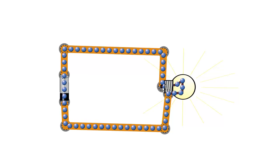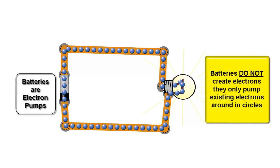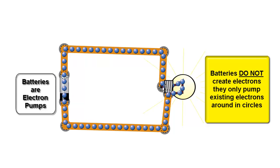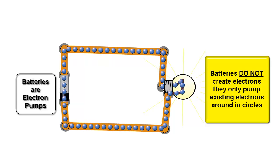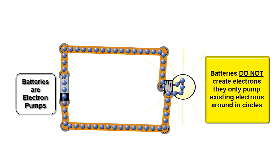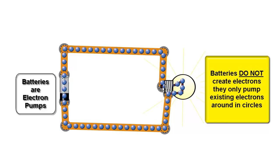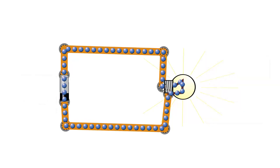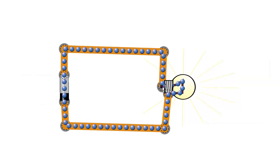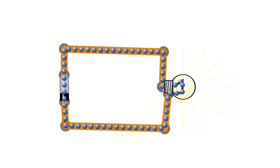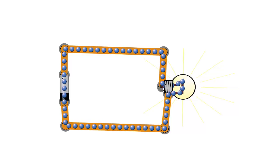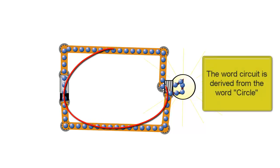Now an important thing to keep in mind with a circuit like this is that the battery is an electron pump. It's pumping electrons from the bottom leg of the circuit to the top leg of the circuit. It's not creating electrons. It's taking electrons that are already there and it's pumping them around in circles. And this is what circuits do. In fact, the term circuit comes from the word circle.